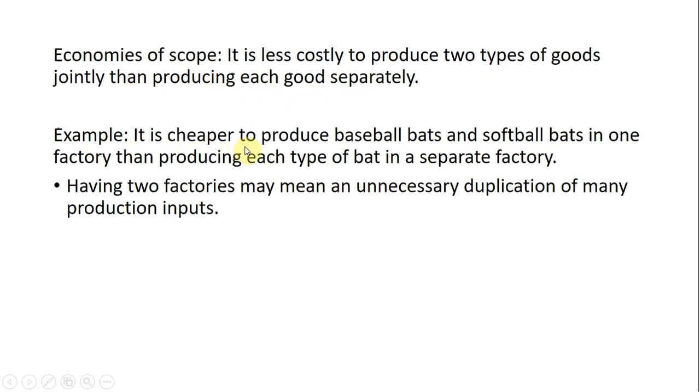For example, it is cheaper to produce baseball bats and softball bats in one factory than producing each type of bat in a separate factory. Having two factories may mean an unnecessary duplication of many production inputs.